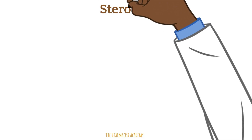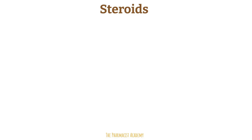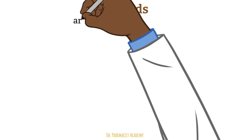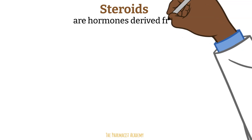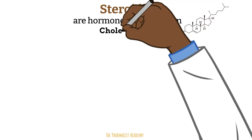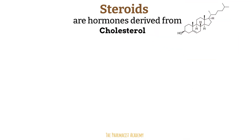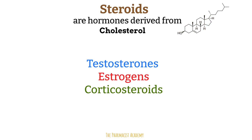The terms mineralocorticoid and glucocorticoid are used to classify steroids. Steroids refers to hormones produced in the body that are derived from cholesterol. Examples include testosterone, estrogens, and corticosteroids. But in clinical practice, when we say steroids, we are usually referring to corticosteroids, and that will be the focus of this video.